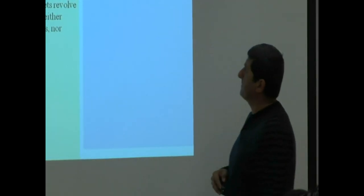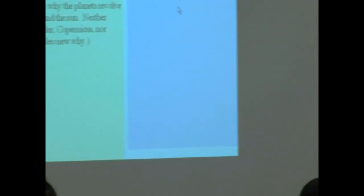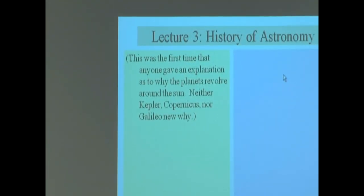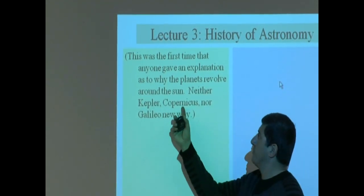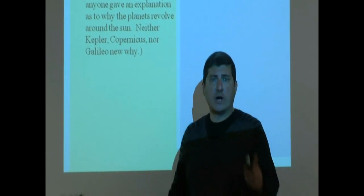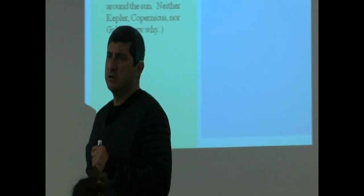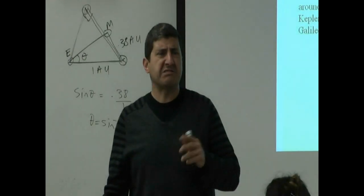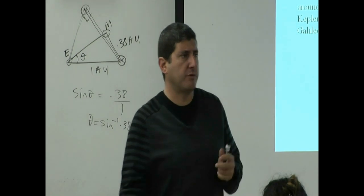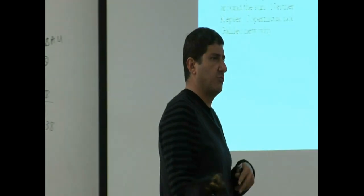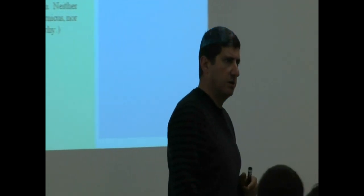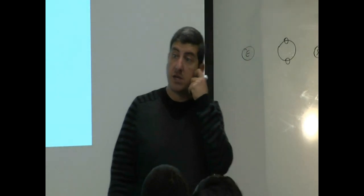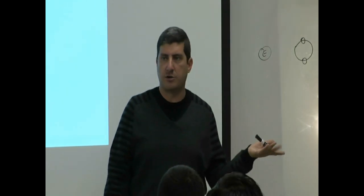This was the first time that anyone gave an explanation as to why the planets revolved around the sun. If you had asked Kepler, Copernicus, or Galileo why they revolve around the sun, they would have said, 'That's their natural motion — planets revolve around the sun because they were made to revolve around the sun.' Kepler would have said they go elliptically around the sun, but God made them to go elliptically. He didn't know there was something called gravity.